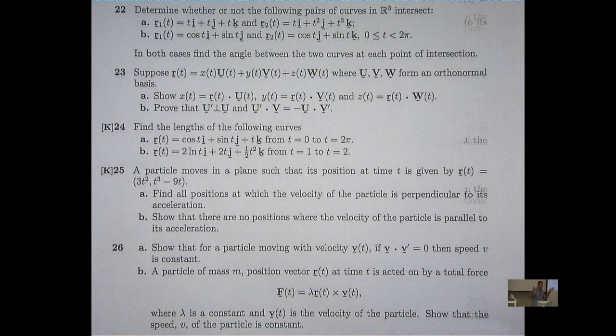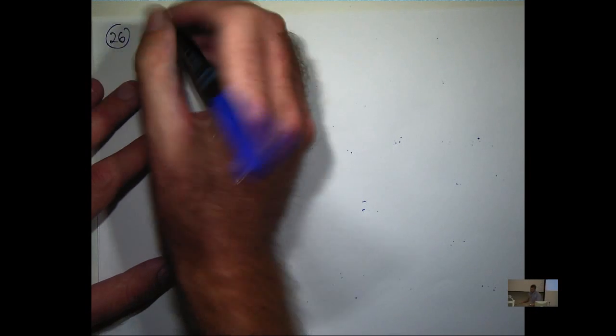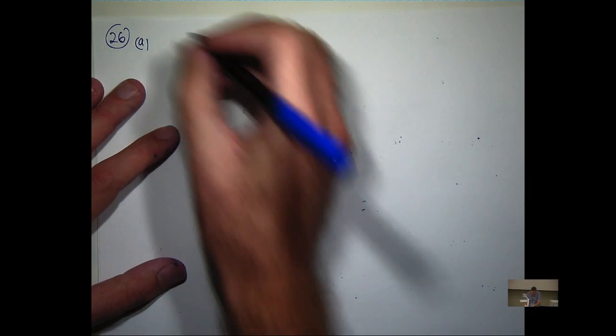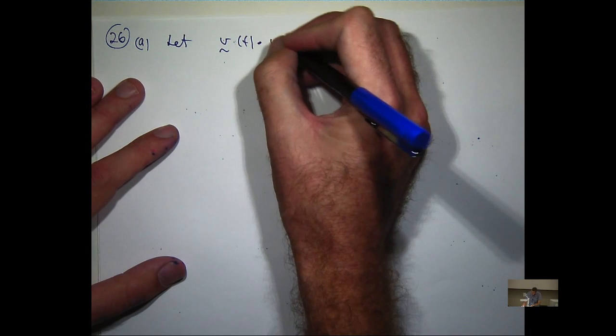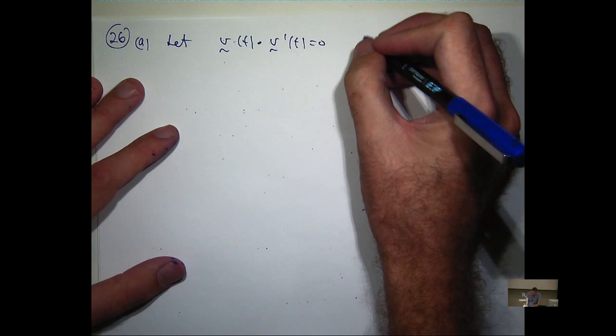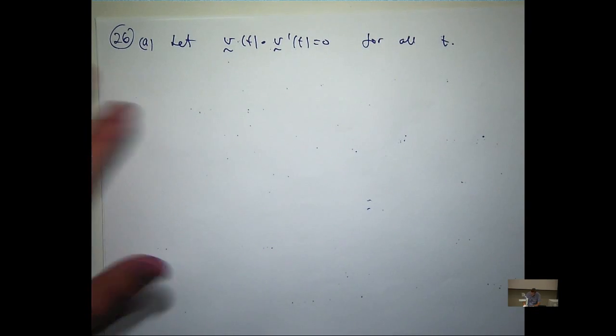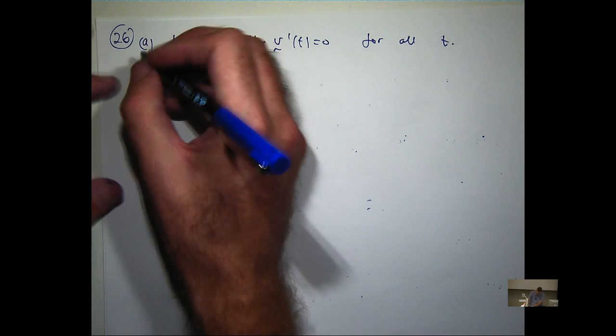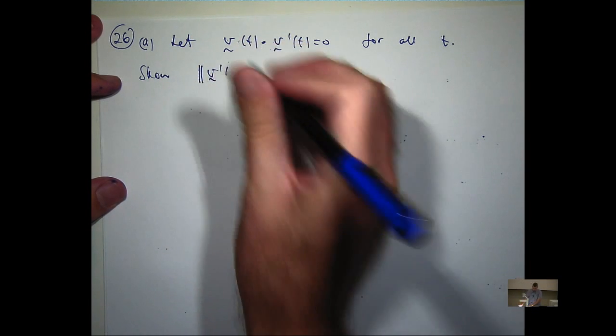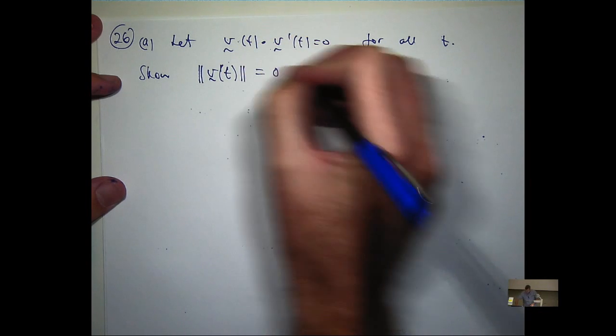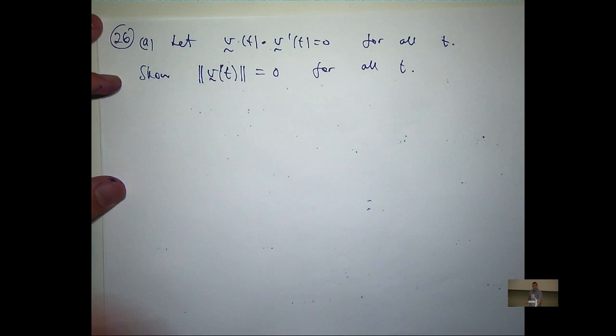Part A, show that for a particle moving with a velocity V, if the dot product of V with its derivative is zero, then the speed is constant. Well, let's have a look and see what we can see. So this is 26. What we want to do is show... So this is the speed, right?